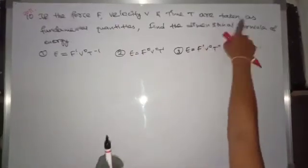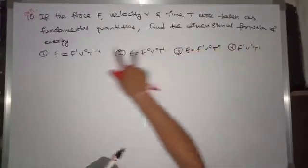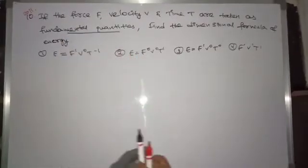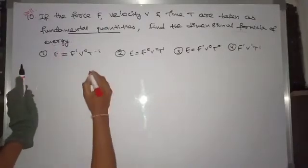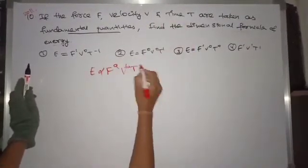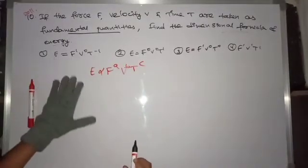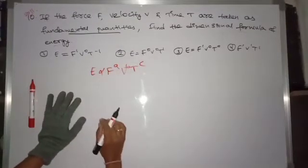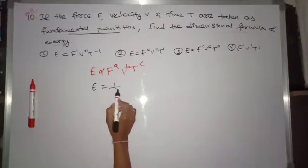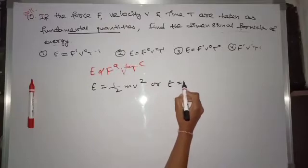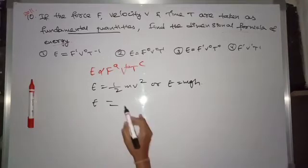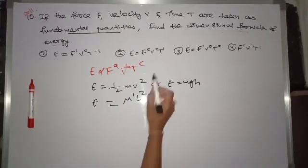Coming to the next question from 2011: if force F, velocity V, and time T are taken as fundamental quantities, find the dimensional formula for energy. We assume energy is directly proportional to F^a · V^b · T^c. The actual dimensional formula for energy, derived from E = ½mv² or E = mgh, is M¹L²T⁻².